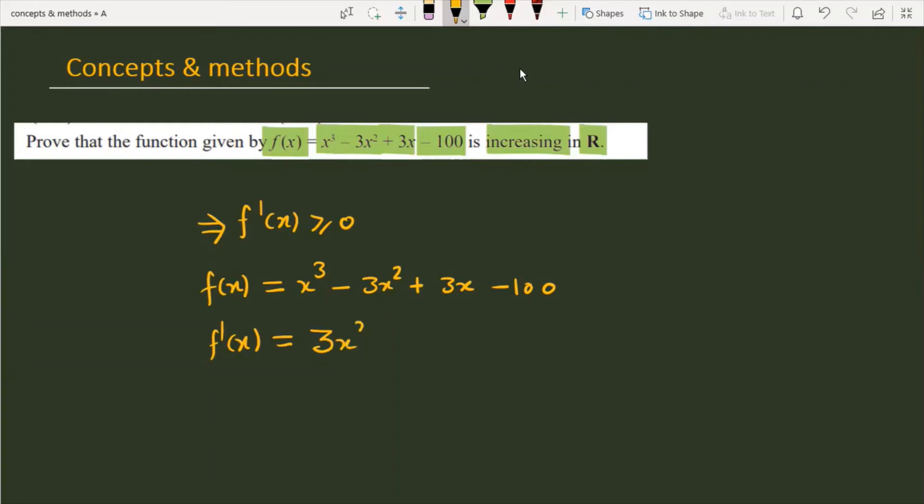We get 3x² - 6x + 3. If we simplify this expression, you can see that 3 is common and this term becomes x² - 2x + 1.